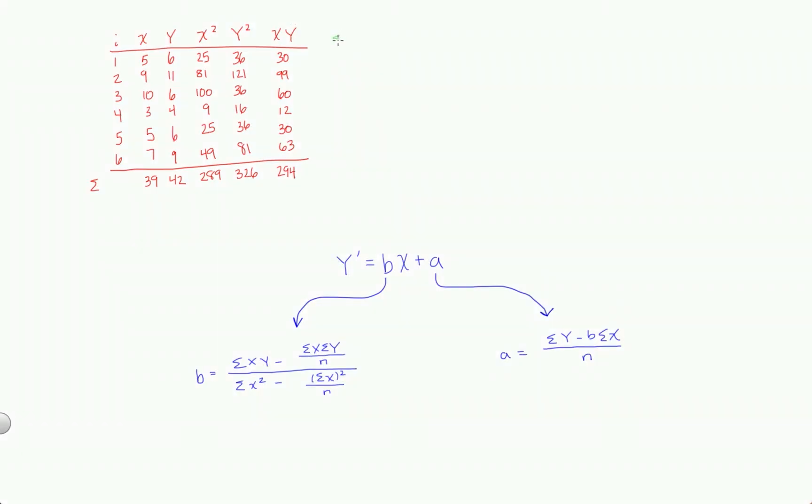All right, so sigma x equals 39. The sum of all the x values is 39. Sigma y, the sum of all the y values, is 42. Sigma x squared, the sum of all the squared x values, is 289. And then sigma xy, again, I'm kind of skipping sigma y squared because, as you'll see, it's not a part of these formulas here. So sigma xy, the sum of all the x times y products for each participant, is going to equal 294.